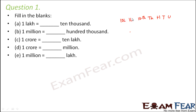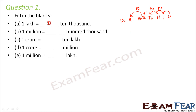Now for every one jump, there is a 10 involved. So for 10,000 to 1 lakh — 1 lakh is a bigger number — 1 lakh would be equal to 10 times 10,000.